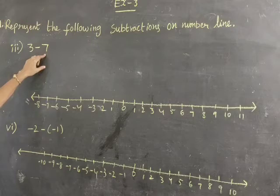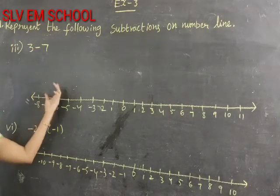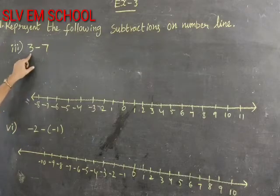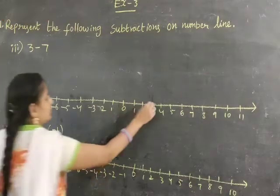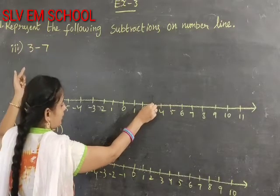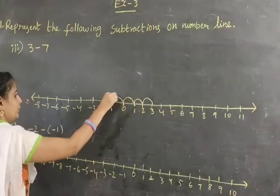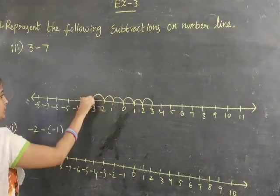When positive integer is subtracted, we go to the left side of the number line. Here 3 is the start. Start from 3, now go 7 steps on the left side on the number line.